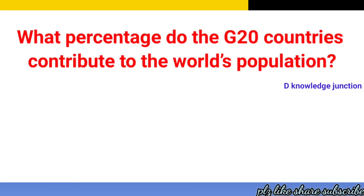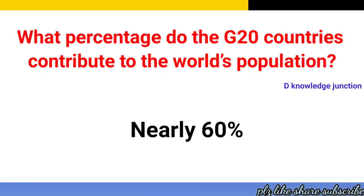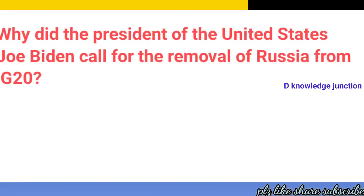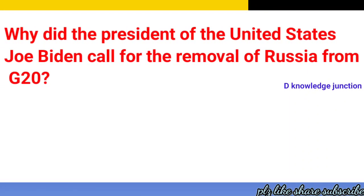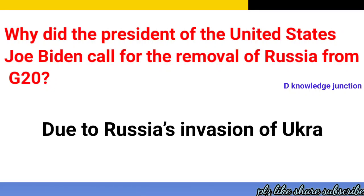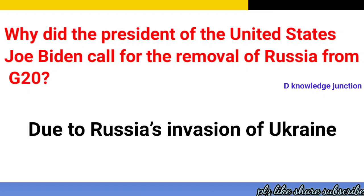What percent do the G20 countries contribute to the world's population? The correct answer is nearly 60%. Why did the President of the United States, Joe Biden, call for the removal of Russia from G20? The correct answer is due to Russia's invasion of Ukraine.